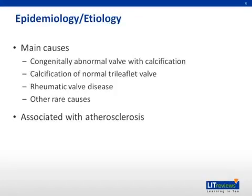Other rare causes of valvular aortic stenosis include Fabry's disease, systemic lupus erythematosus, and Paget's disease. The relative frequency of these causes varies geographically. In the U.S., calcification of either a bicuspid valve or a normal tricuspid valve is most common, with bicuspid valves typically found in younger patients. Worldwide, rheumatic heart disease is the most common cause.